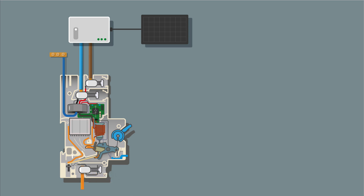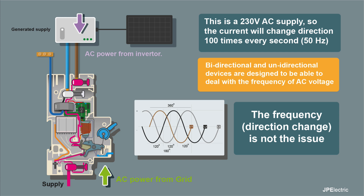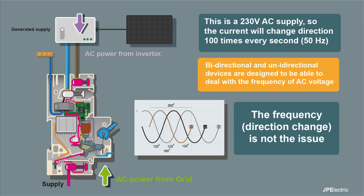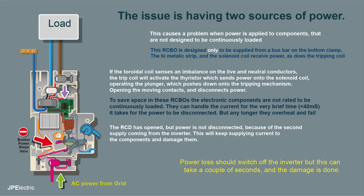But remember, this is AC current. AC current oscillates 50 times a second, and changes direction 100 times a second. So this current is rapidly changing direction. Our bi-directional and unidirectional devices are designed to be able to deal with the frequency of AC voltage. The frequency or direction change is not the issue with bi-directional and unidirectional devices — the issue is where you connect the source of power.